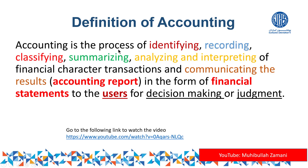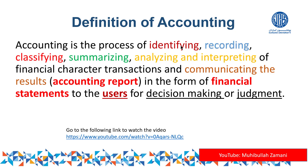Accounting is not just one step; it involves several steps. Step one is identifying — we must identify whether a transaction is an economic or non-economic transaction. The transaction should be a financial-character transaction, meaning it should have some monetary value, such as one thousand, two thousand, and so on. If it does not have a monetary value, we cannot record it in the books of account.